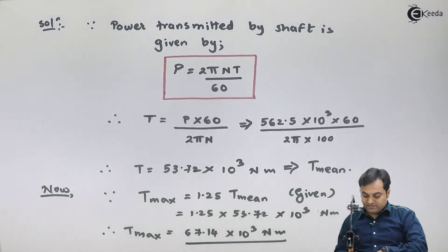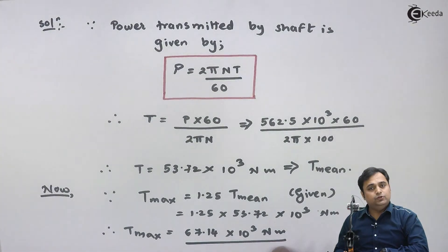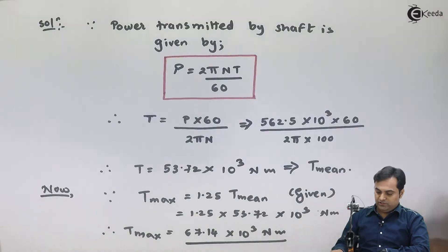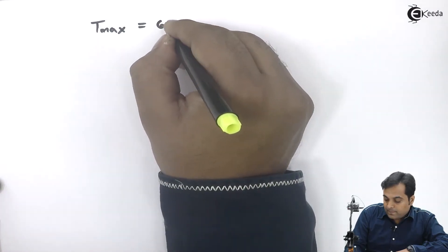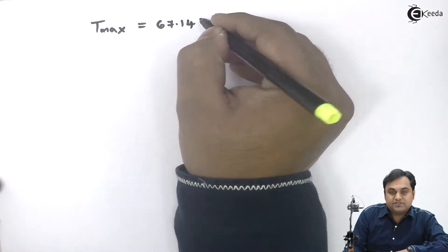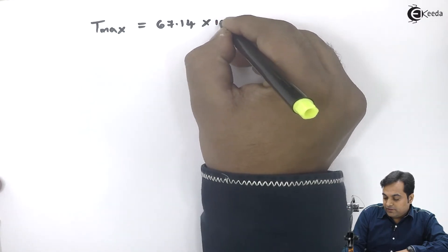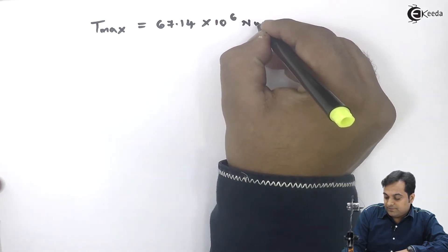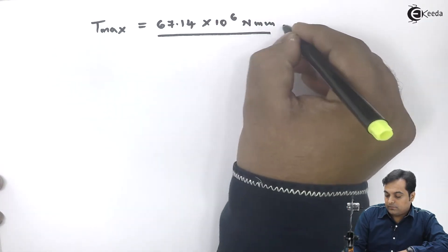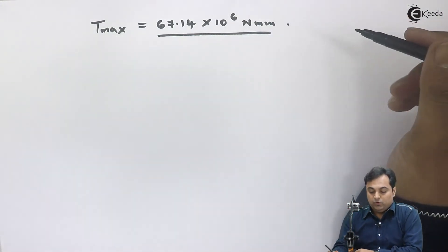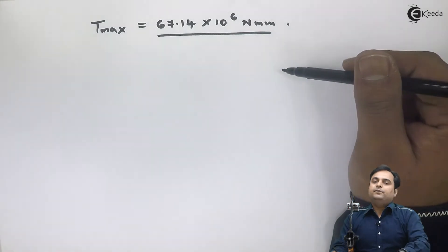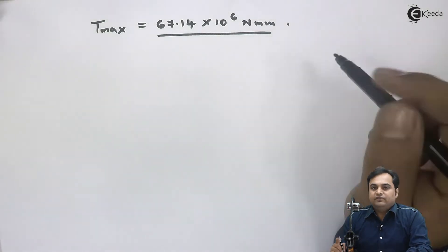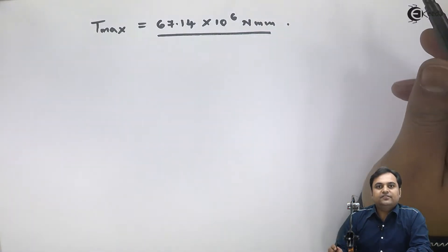T_max is 67.14 into 10 raise to 6 Newton mm. Now that we have maximum torque, we can find the diameter of the hollow shaft by taking first the strength criteria and second the rigidity criteria.